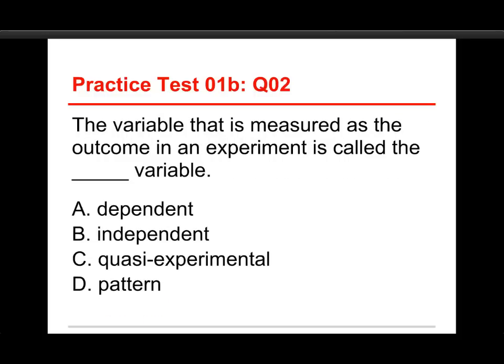Number two: the variable that is measured as an outcome in an experiment is called the blank variable. The choices are dependent, independent, quasi-experimental, and pattern. The answer is A, dependent.